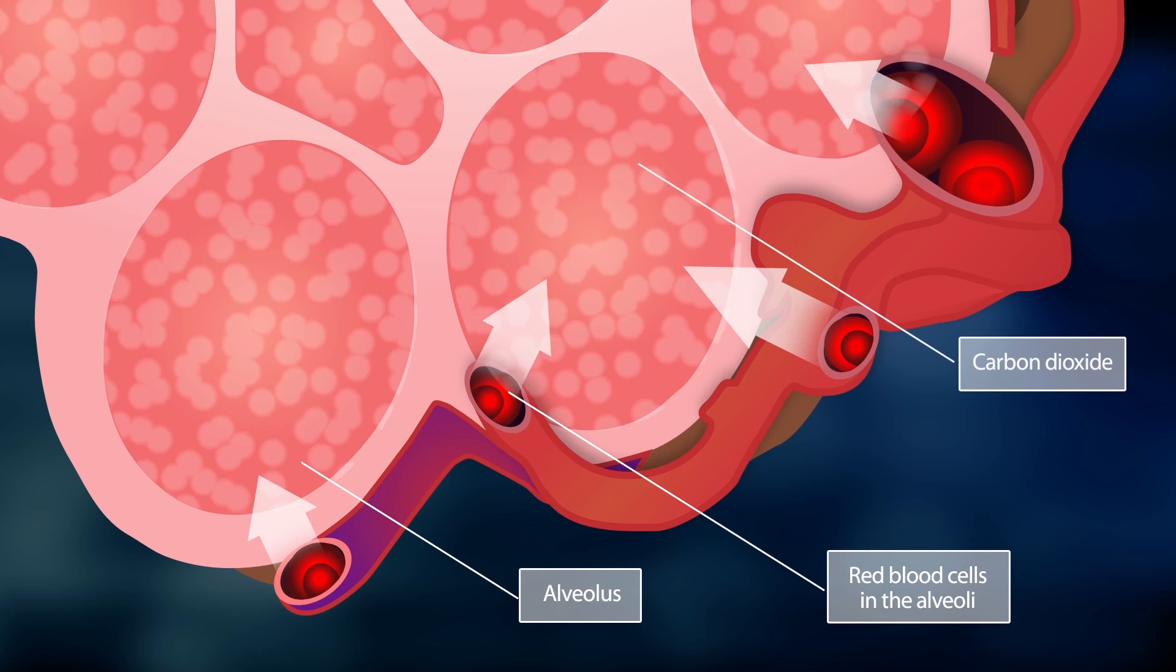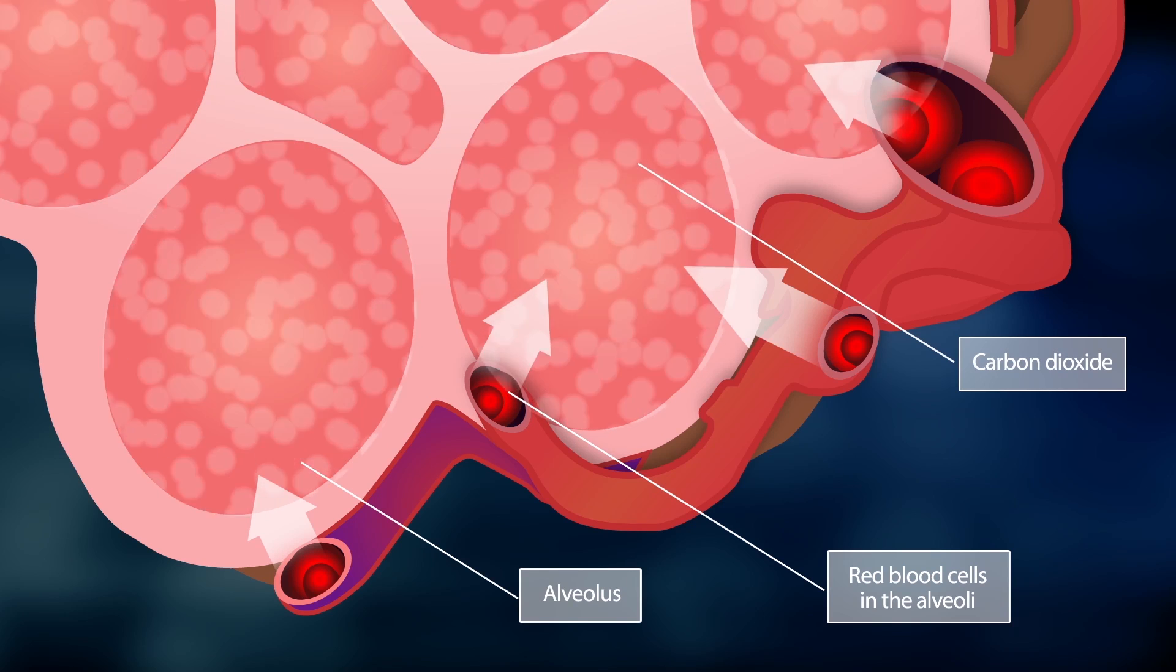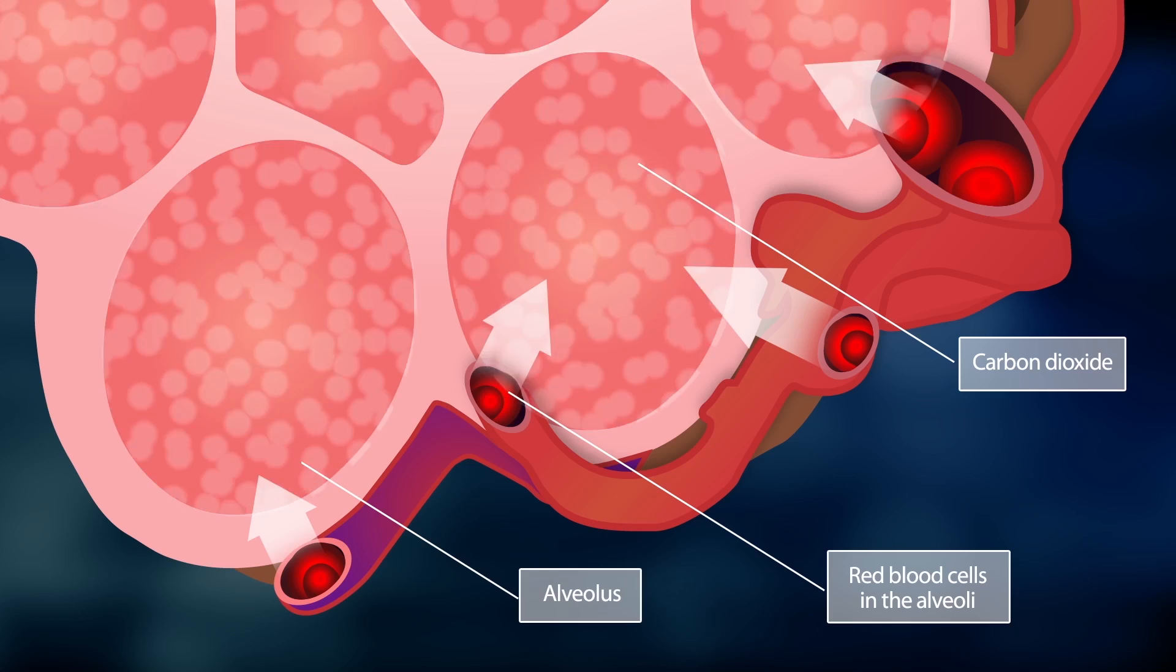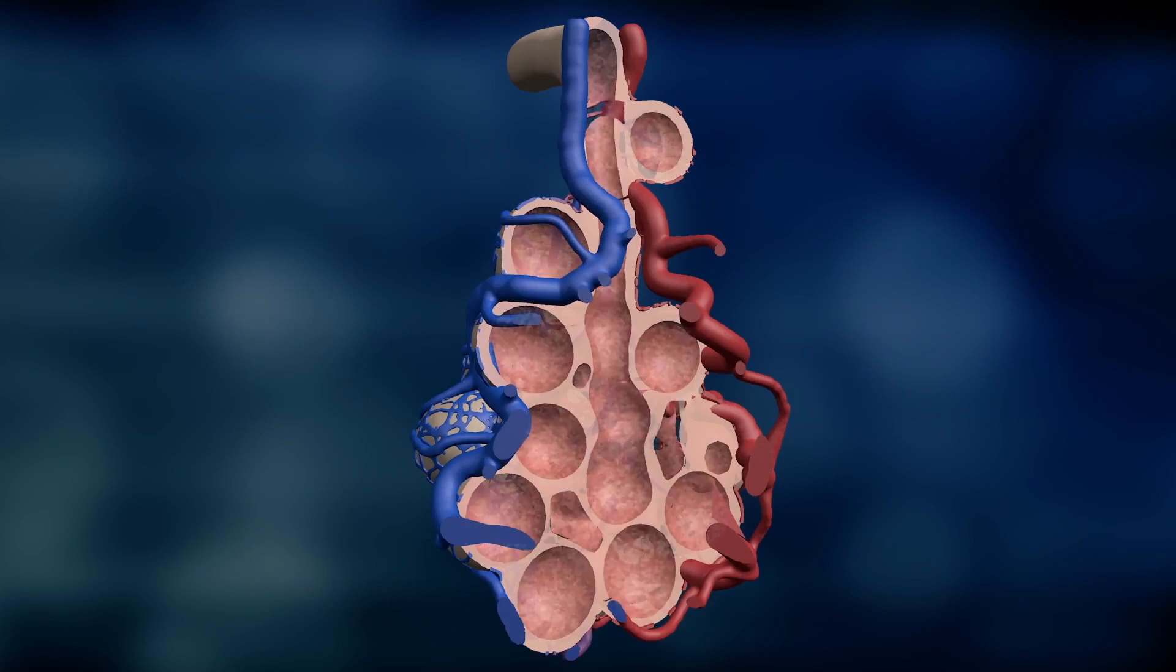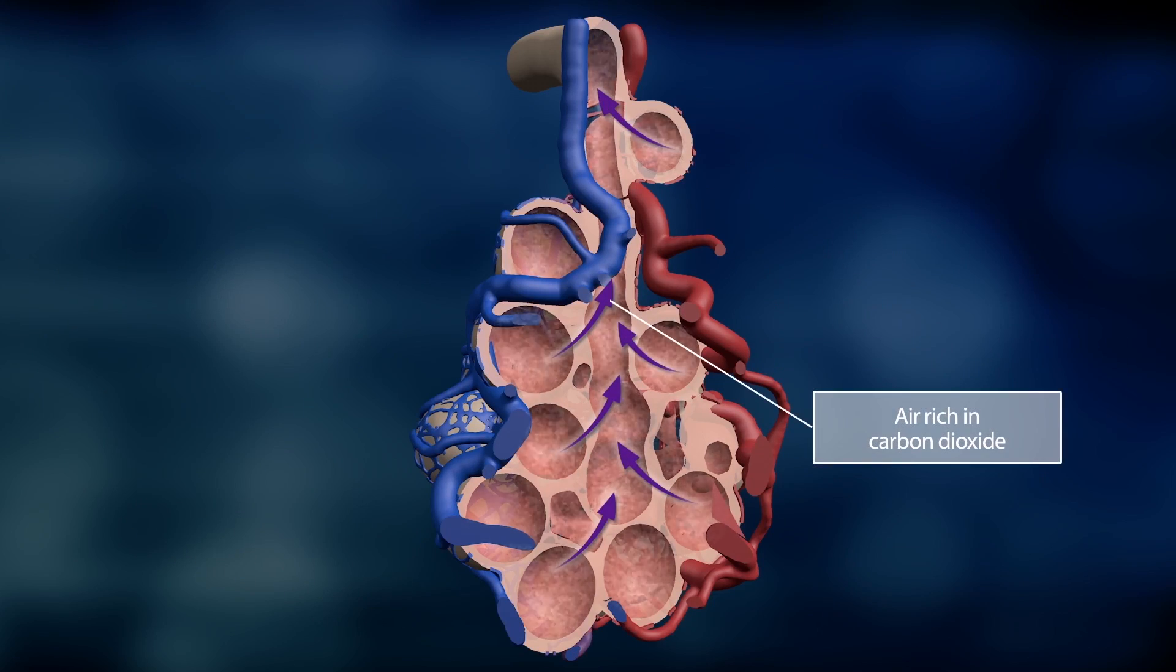In return, carbon dioxide from the red blood cells passes into the alveoli. The carbon dioxide enriched air now streams out of the alveoli and bronchial tubes toward the mouth and nose. This is called exhalation.